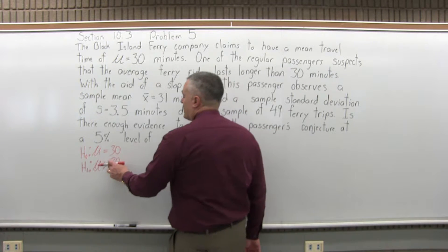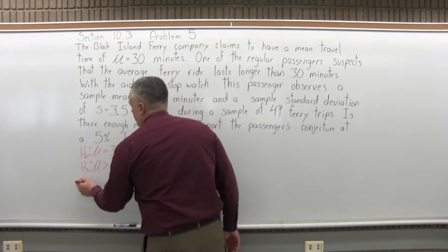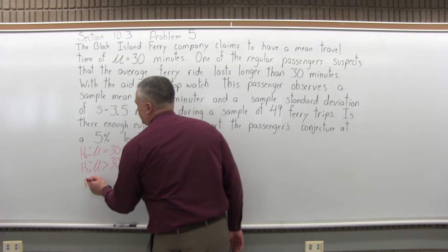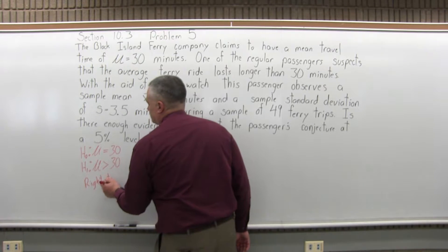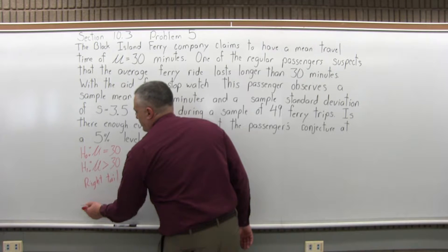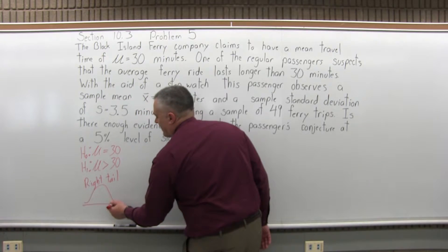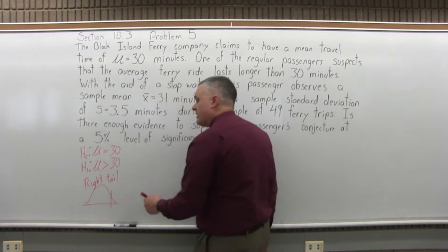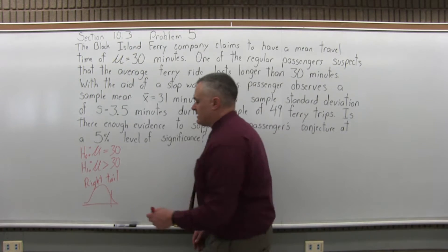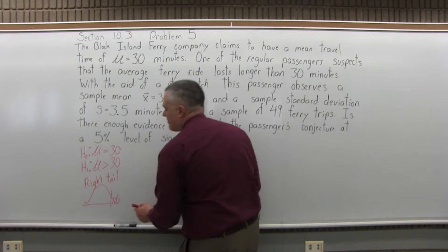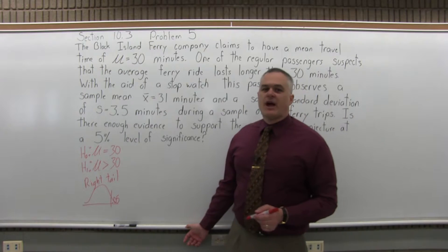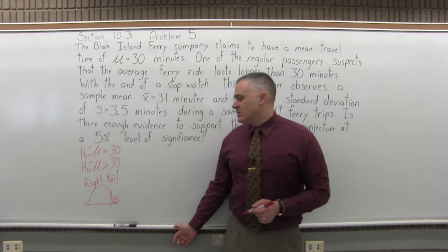Greater than points to the right, so this is a right-tail test. What that means is when we see the graph, the critical region will be on the right. And this is a 5% level of significance, so we want to see if we get into the rightmost 5% of that graph. That's going to be the question.